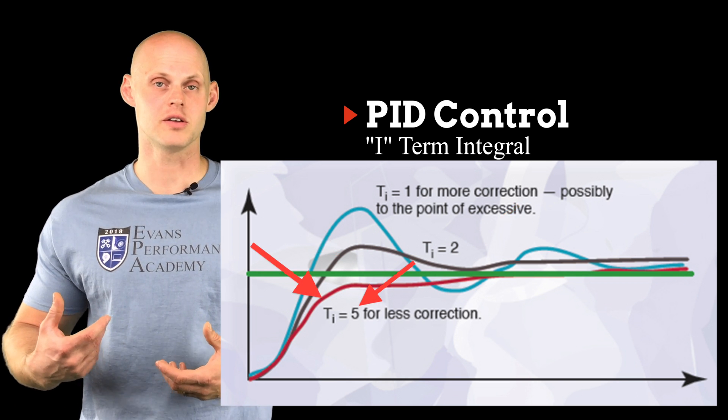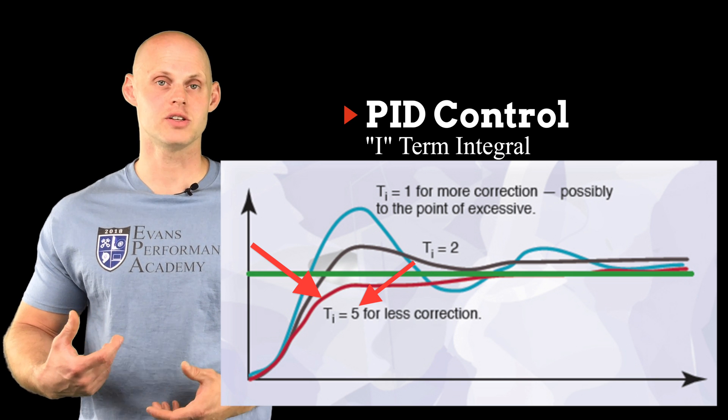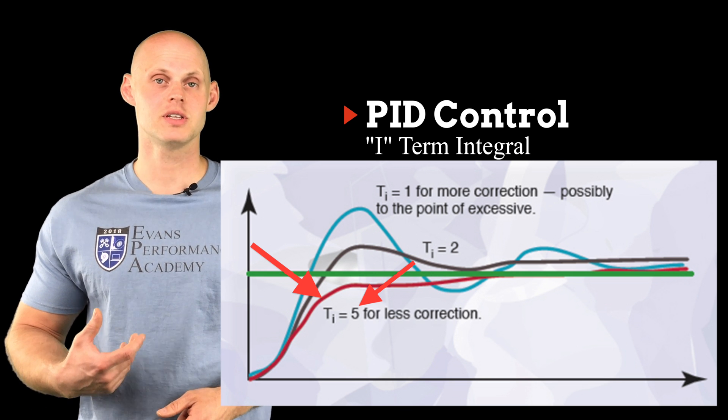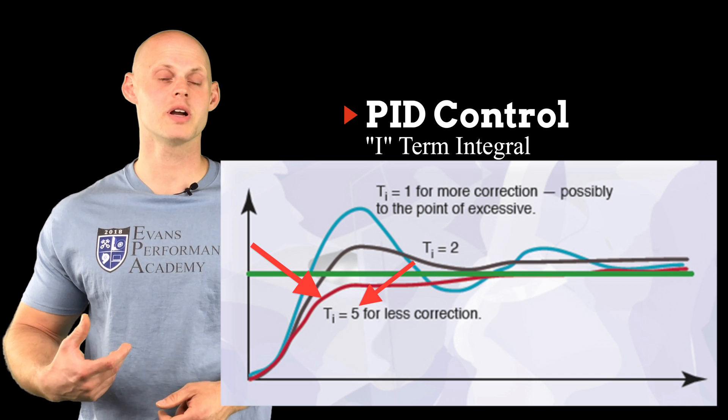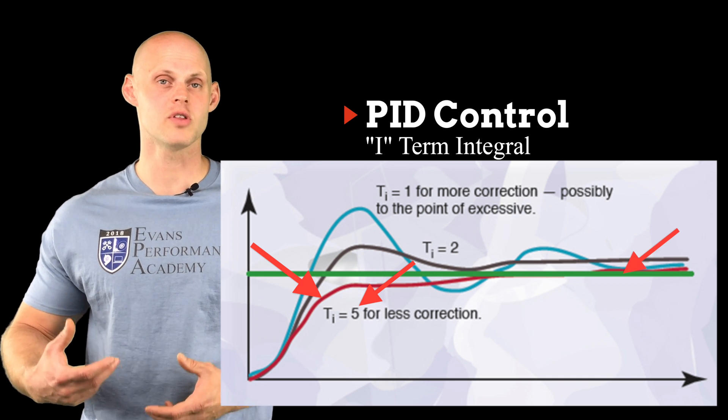And then we finally see here the red line, and we're going to have our I term increase much higher. And we're going to see we're going to slow down our response a bit, but we're going to have it track right to our target for the long term.